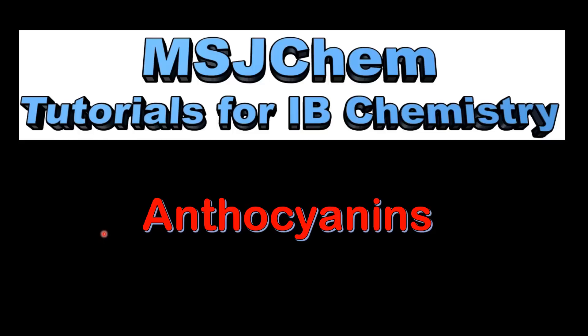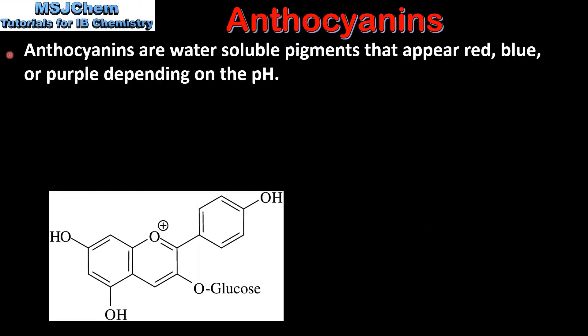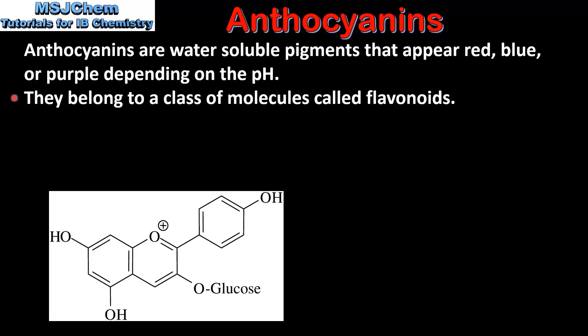This is MSJChem. In this video I'll be looking at the anthocyanins. Anthocyanins are water soluble pigments that appear red, blue or purple depending on the pH. They belong to a class of molecules called flavonoids.